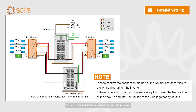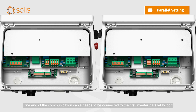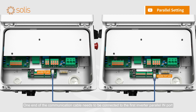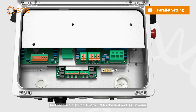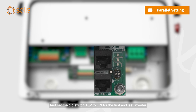If multiple inverters need to be paralleled, one end of the communication cable needs to be connected to the first inverter parallel in port and the other end to the second inverter parallel out port, and set DIP switch 1 and 2 to on for the first and last inverter.